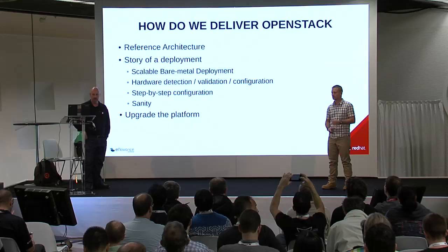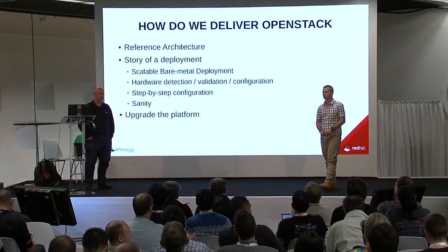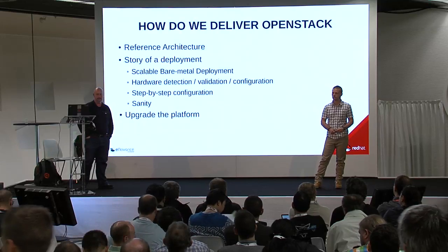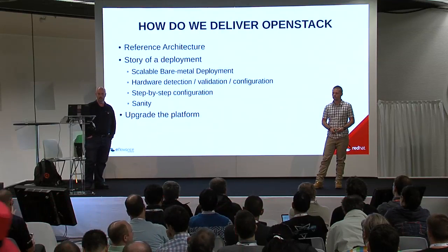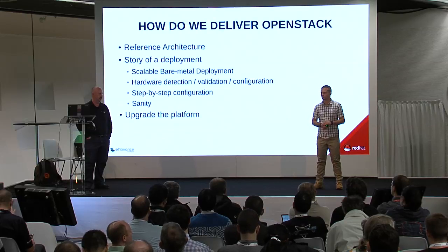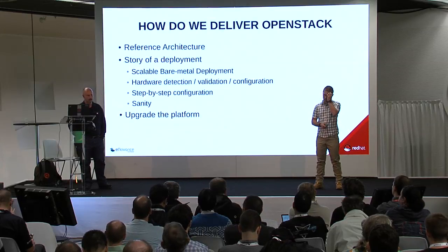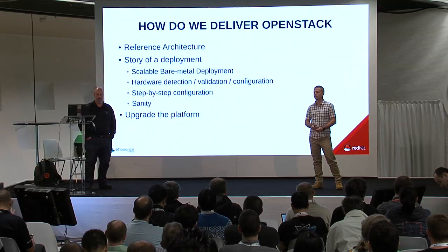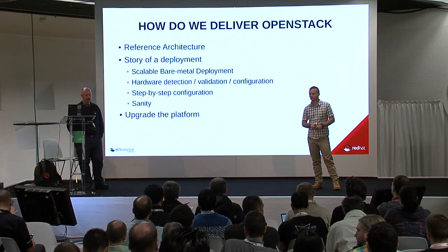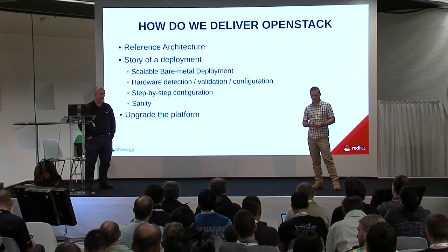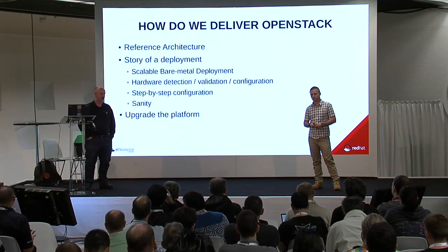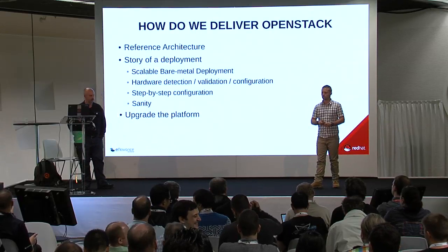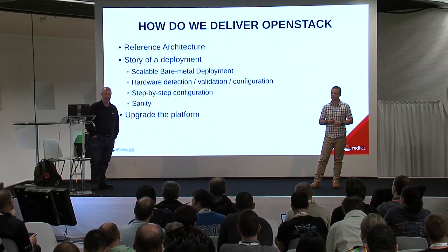Here is the agenda for the session. We'll start by discussing the reference architecture we are using to deploy OpenStack, and we will show you how we deploy OpenStack and which choices we made to have scalable deployments. We'll go through the bare metal part, the hardware detection and validation, then the step-by-step configuration using Puppet, and the sanity test to validate that everything is okay after a deployment. And finally, the most important part: how to upgrade your platform.